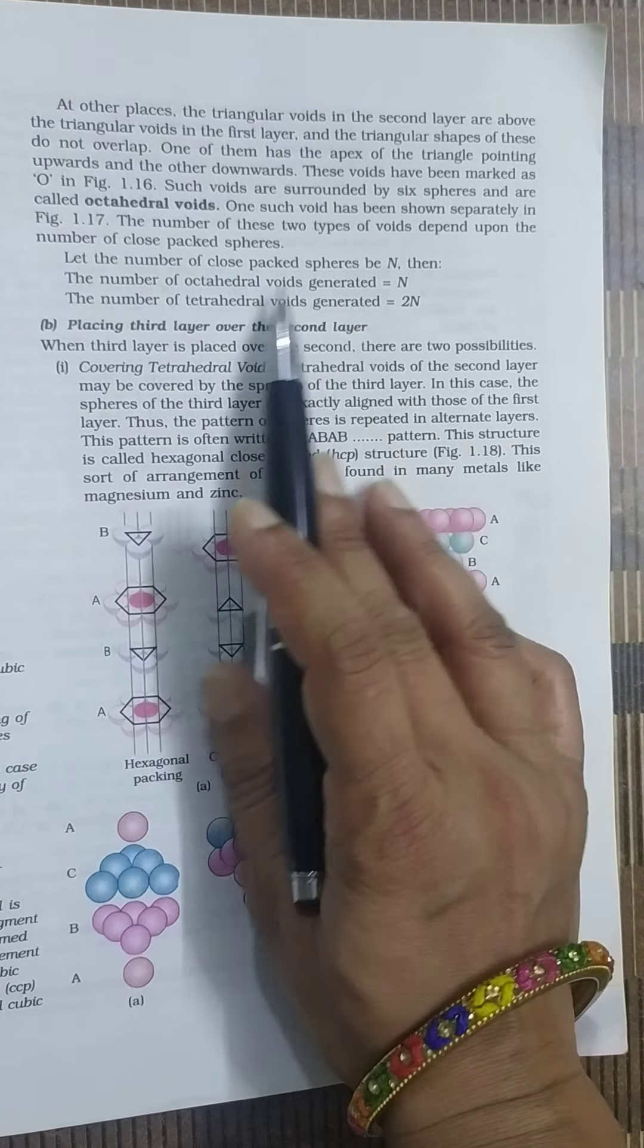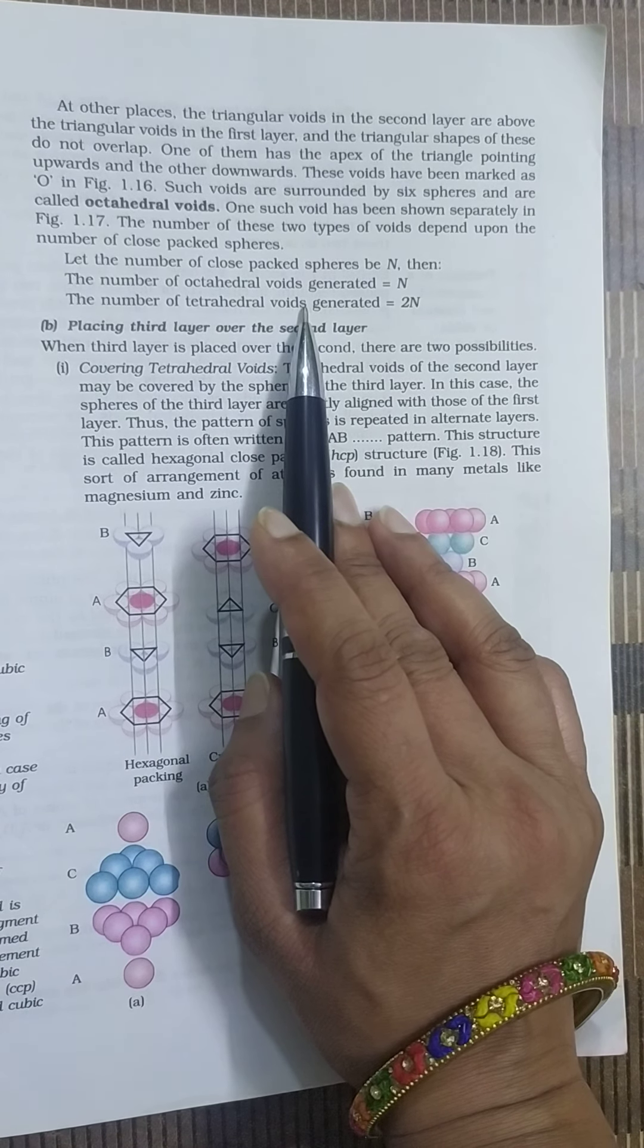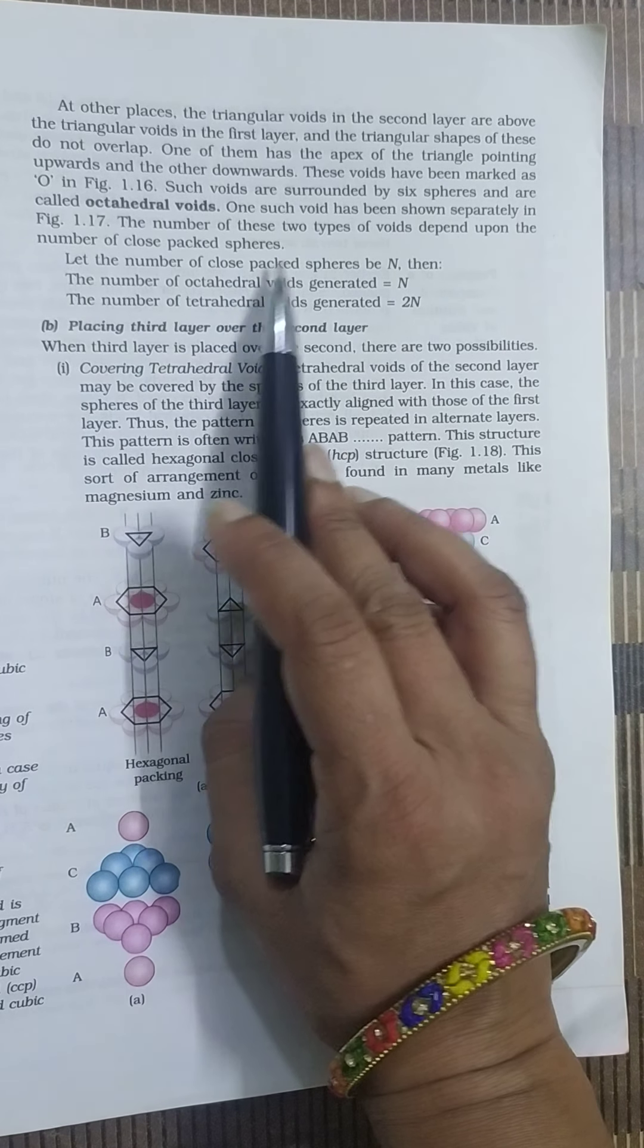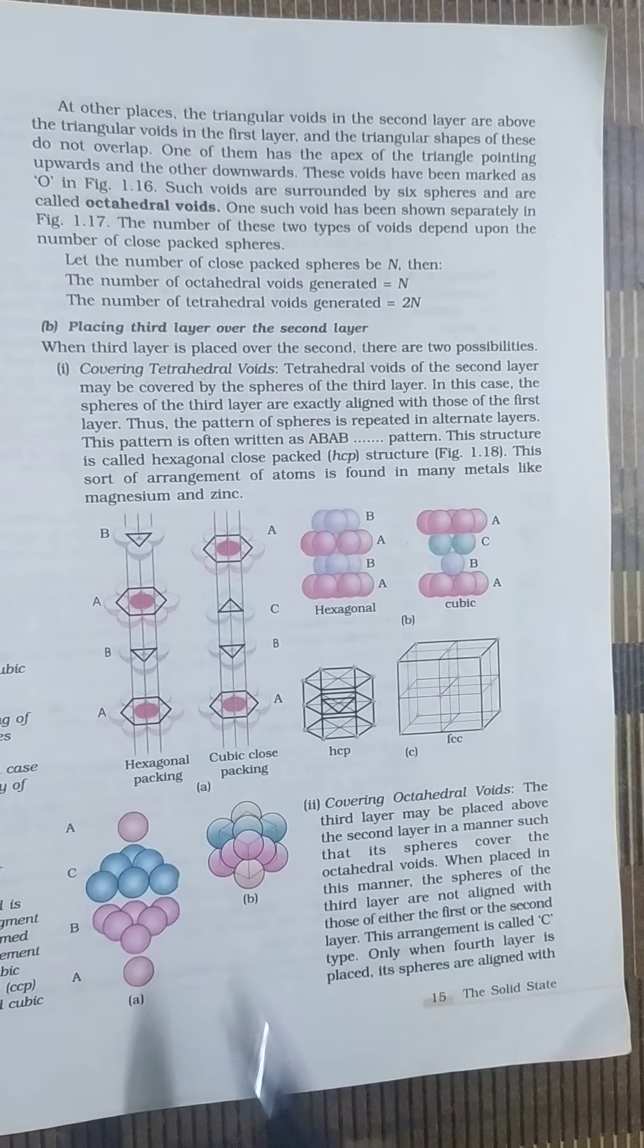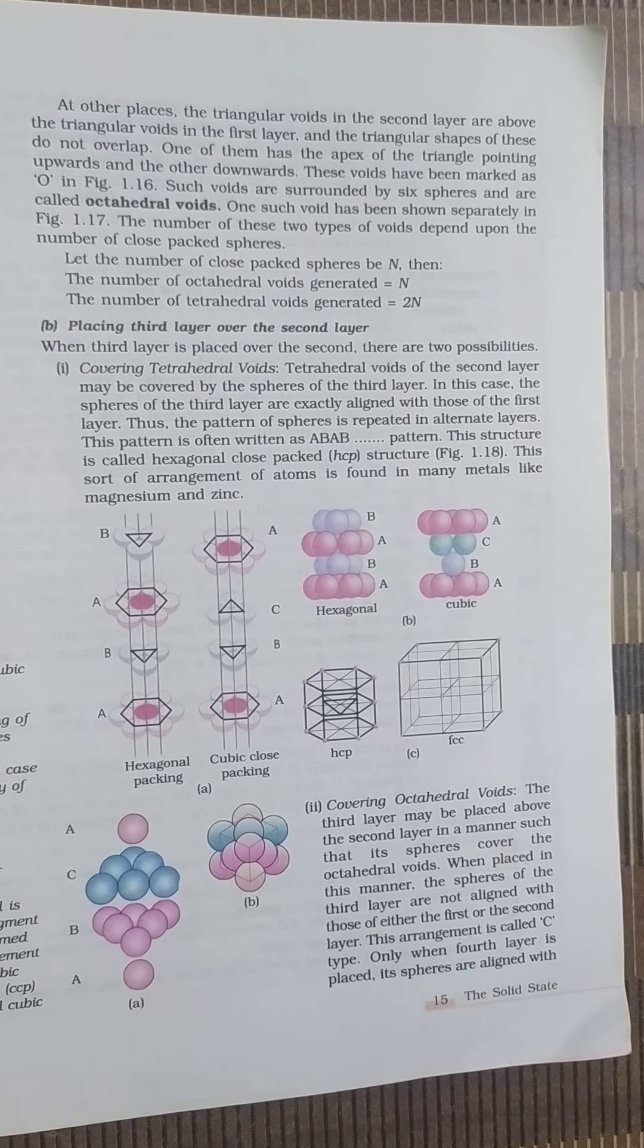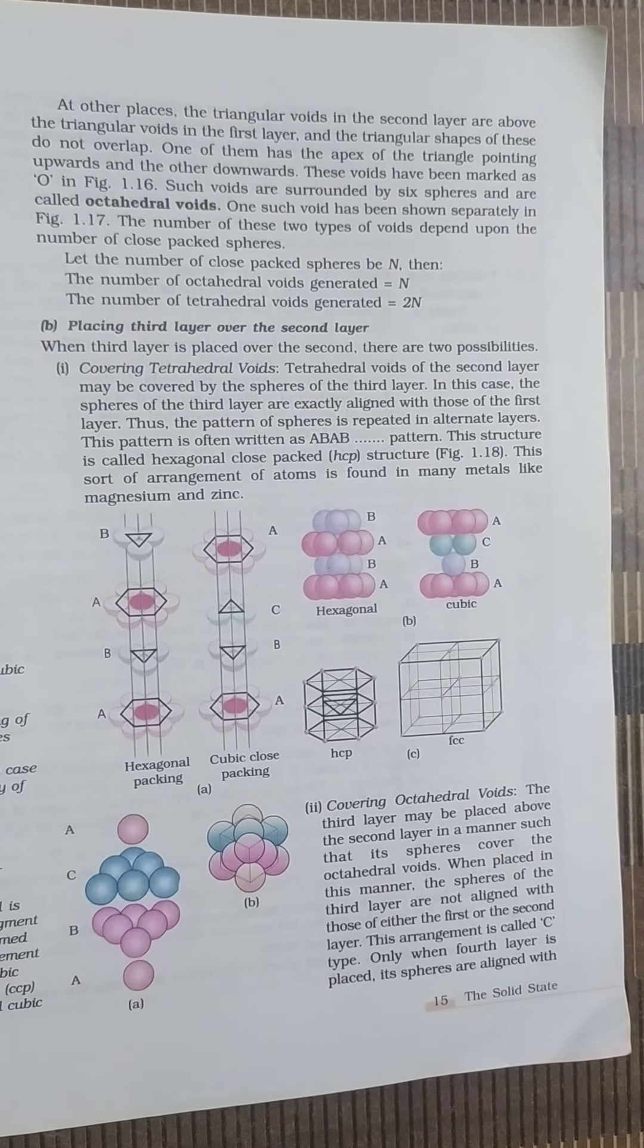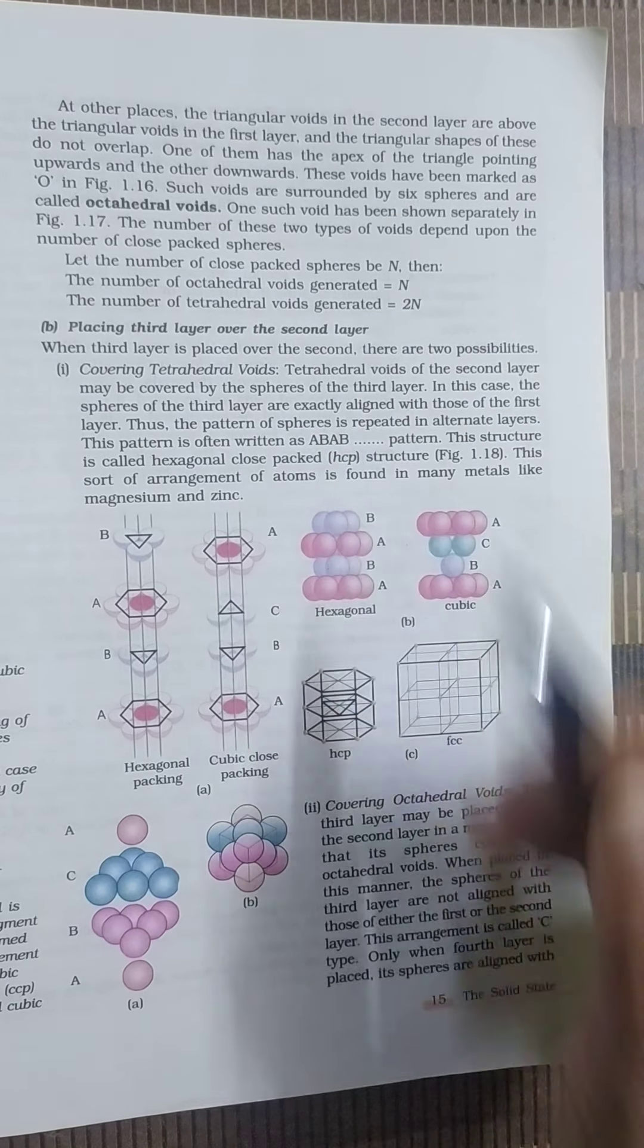There is a direct formula for calculating octahedral and tetrahedral voids. If we suppose that the number of close packed spheres equals to n, then octahedral voids generated will be also equals to n, whereas tetrahedral voids is double of n. So this is all about octahedral and tetrahedral voids.